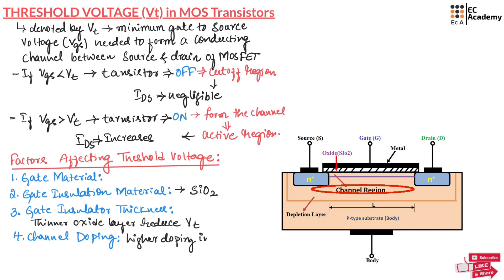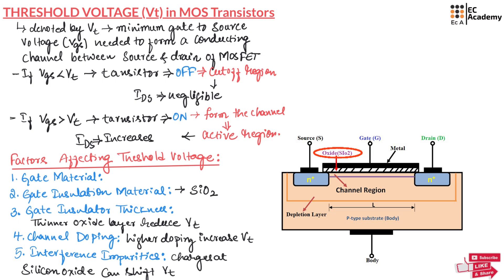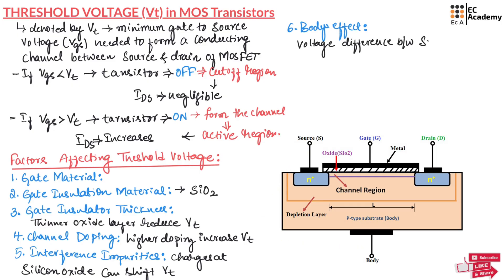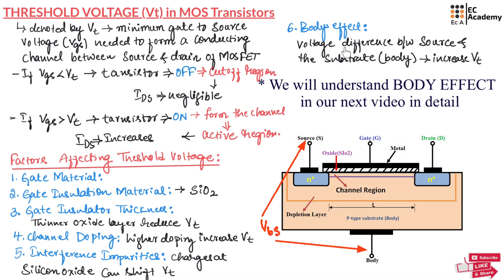Higher doping concentration increases the threshold voltage. The next factor is interface impurities. The charges at the silicon oxide interface can shift the threshold voltage either up or down. The next factor is the body effect. The body effect is the voltage difference between the source and substrate; if there is a voltage difference between source and substrate, this will increase the threshold voltage.